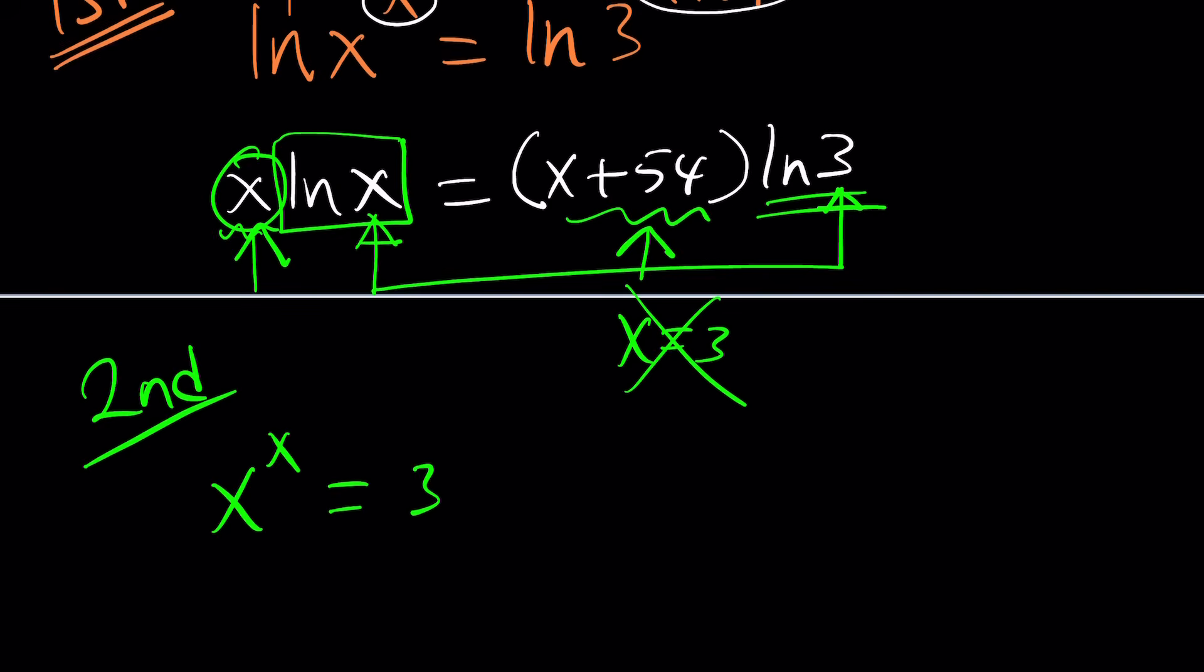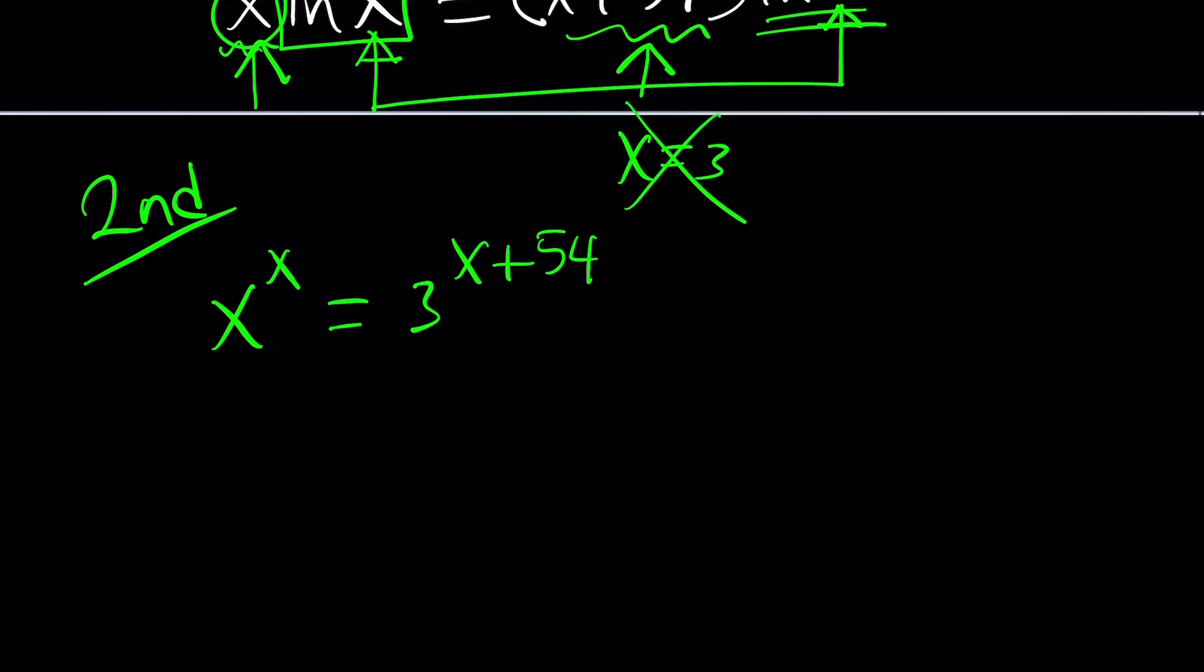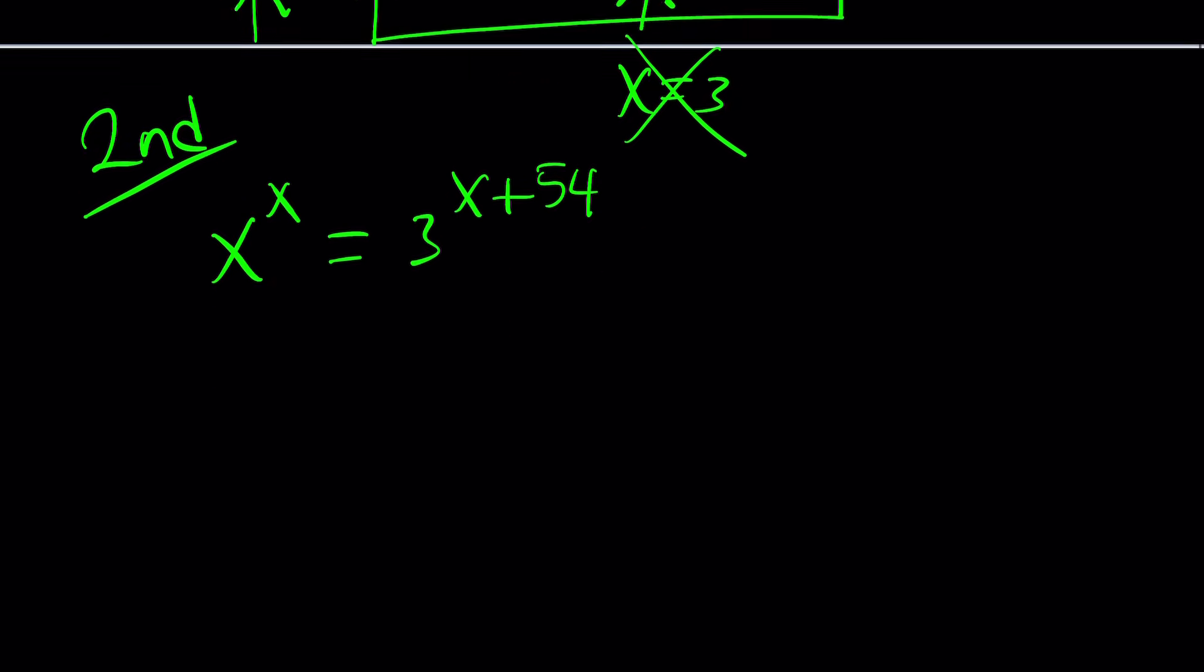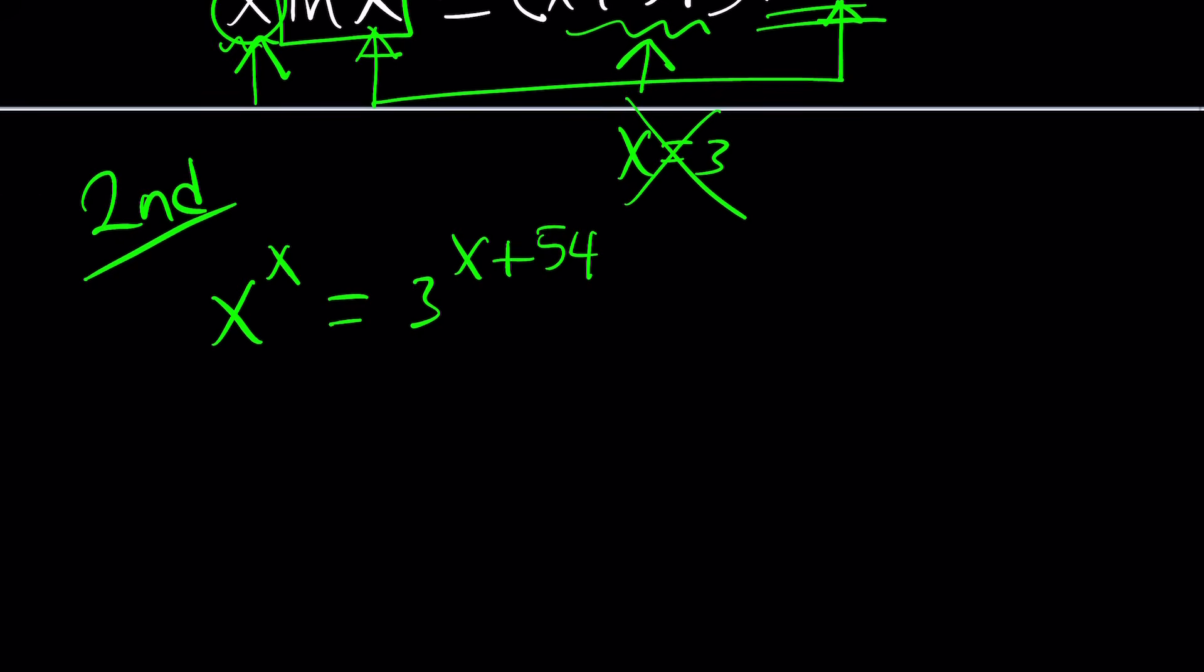The reason why we use the second method is because it's usually cooler. That's what I think at least. And you're free to think otherwise. But the thing is, we're going to be using properties of exponents. So I think it makes sense to talk about them.